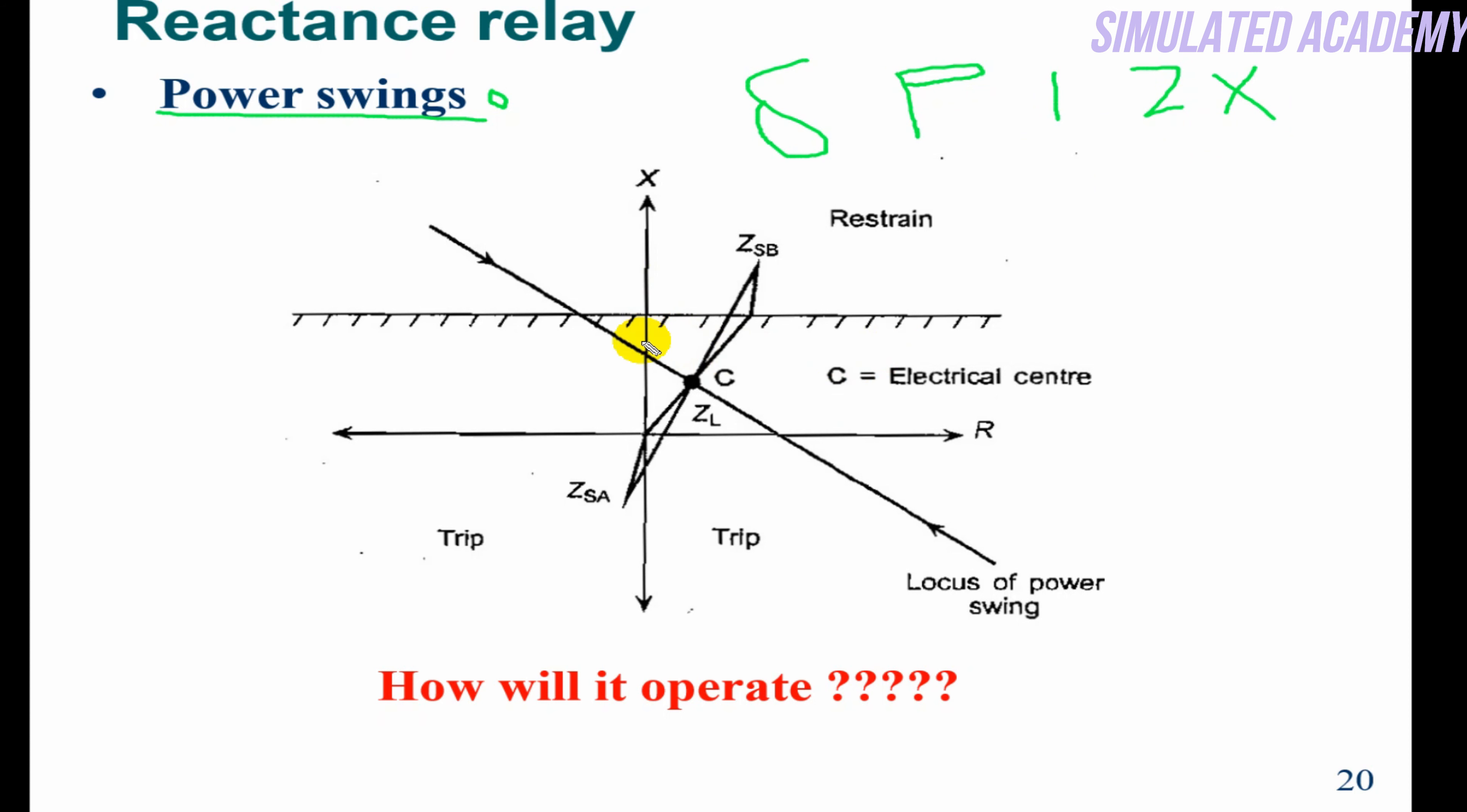because of this the line moves up and down. This point, for example, represents the electrical center. So this is the zone. This is how